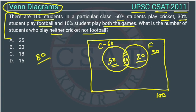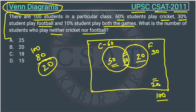Now we have to find who are not playing cricket or football. That will be outside the circles. The combined circle represents a total of 80 students. The total is 100, so 100 minus 80 gives us 20. So 20 students are outside the circles.